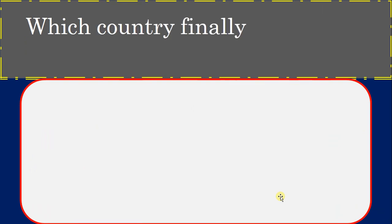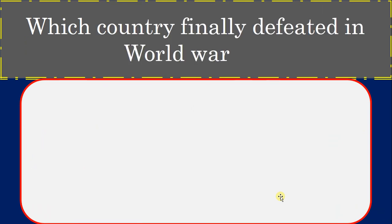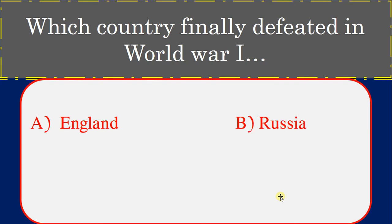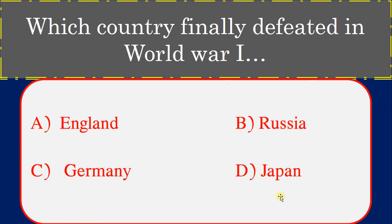Which country was finally defeated in World War One? Options: England, Russia, Germany, Japan. Correct answer: Germany.